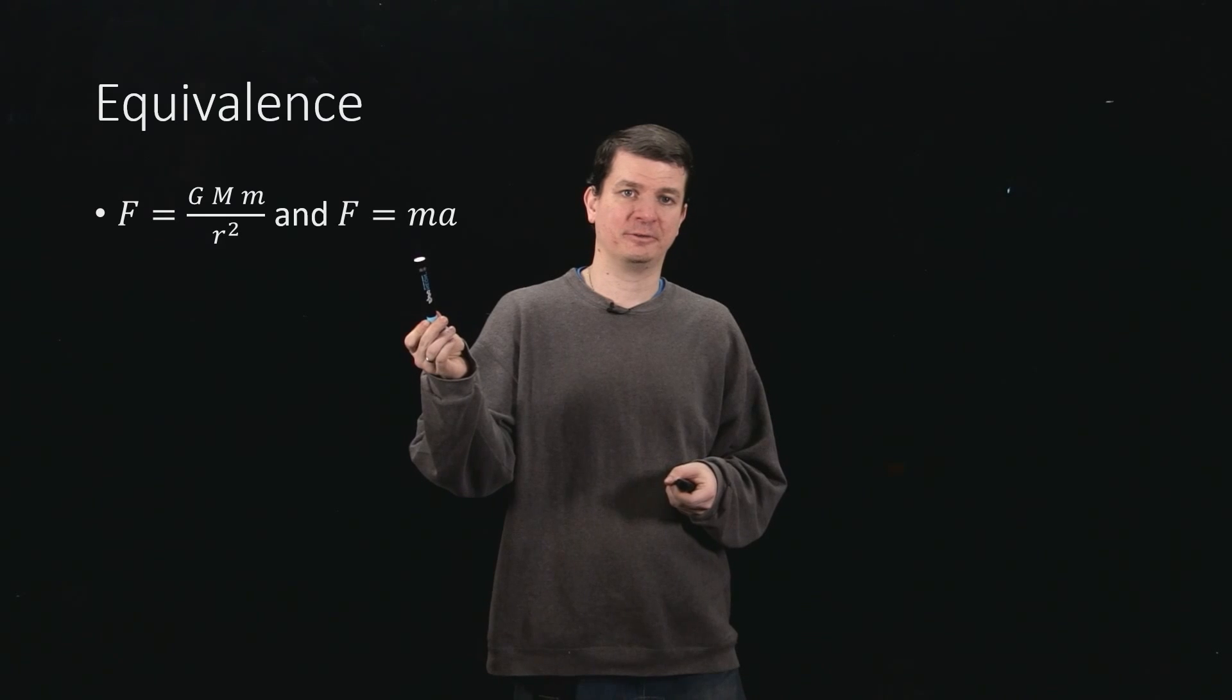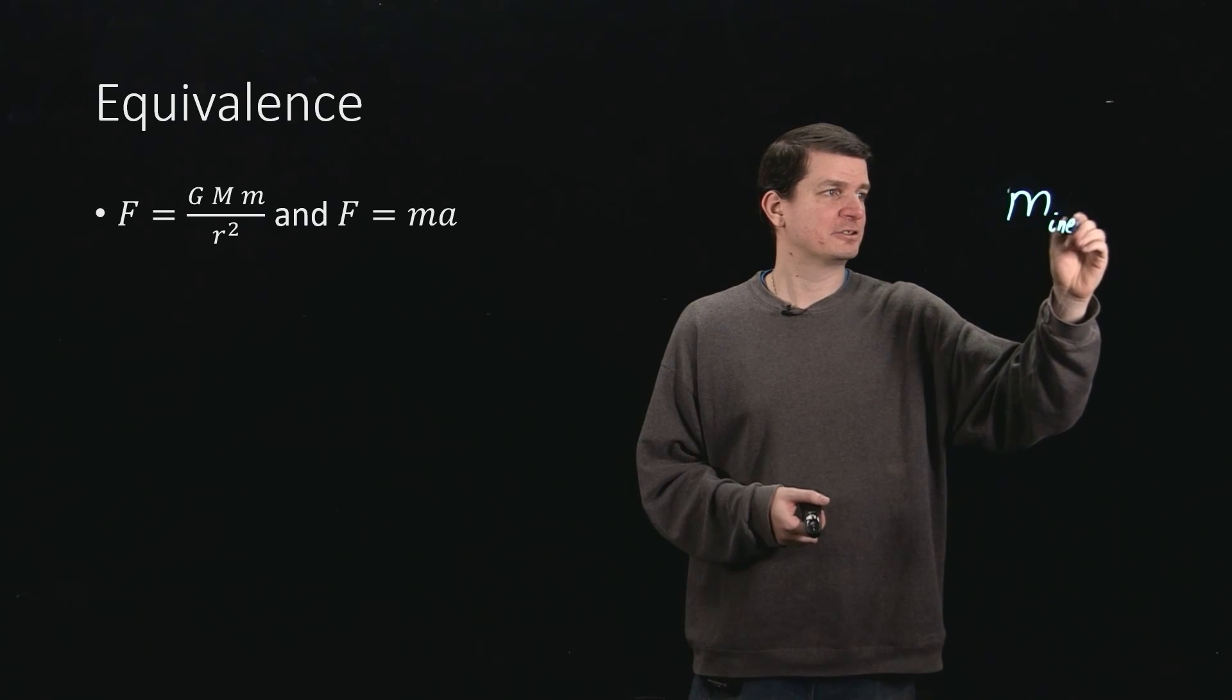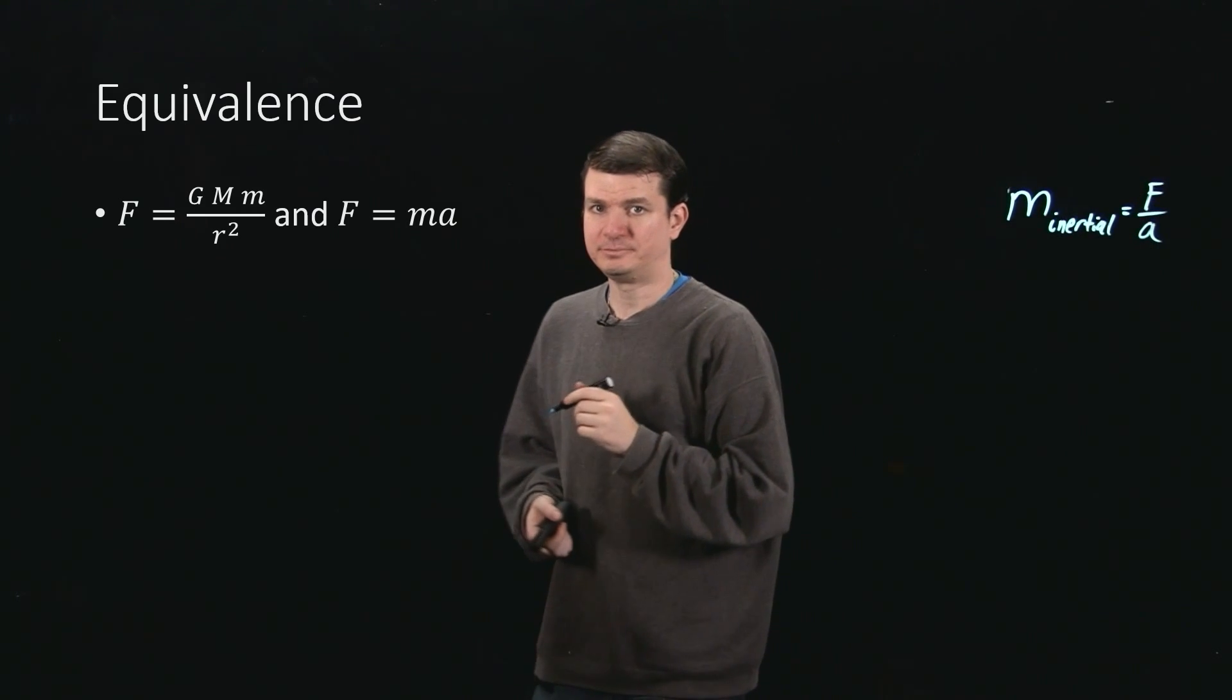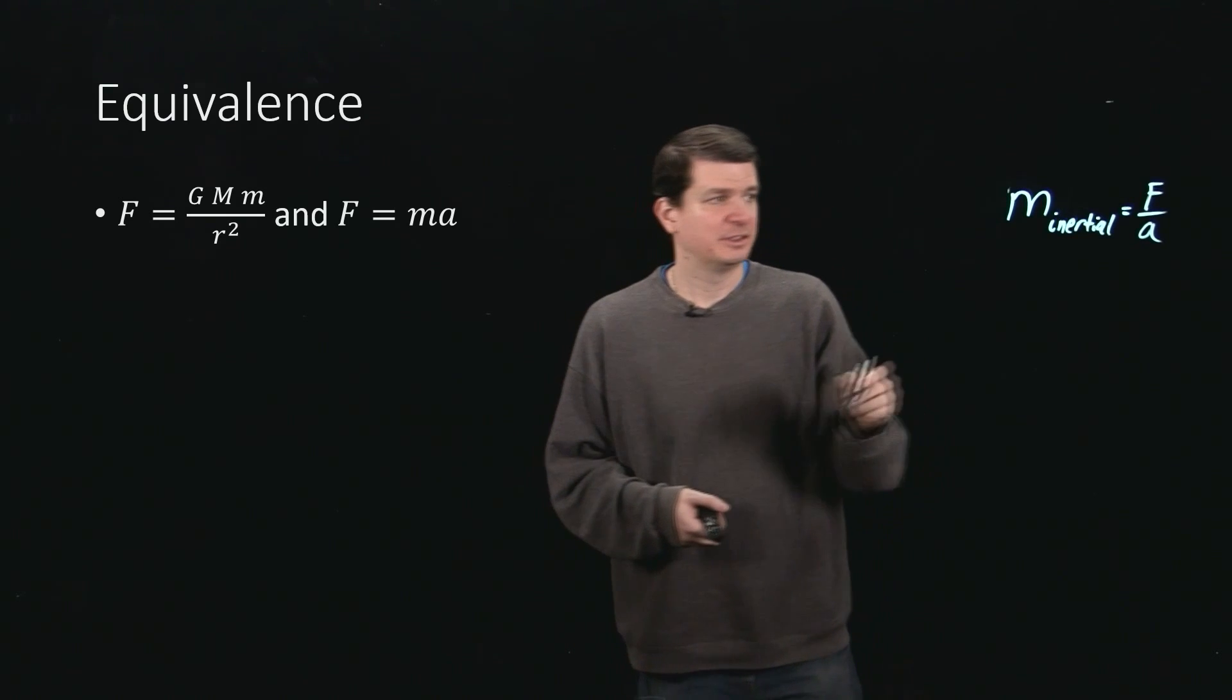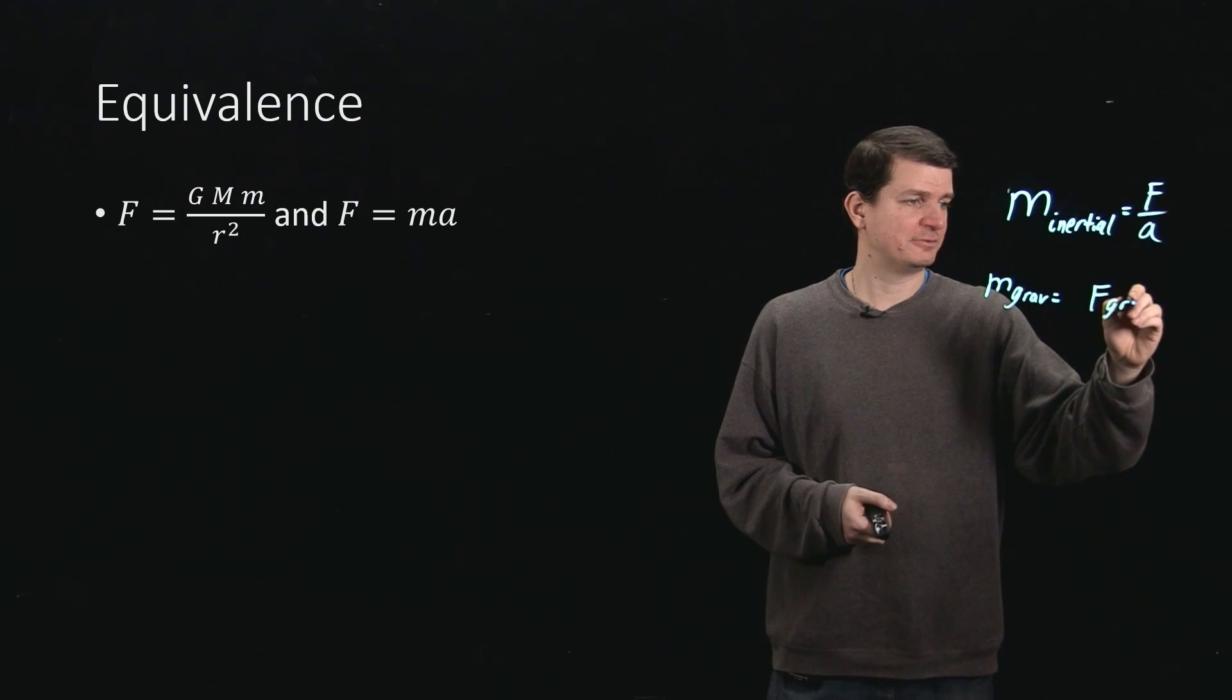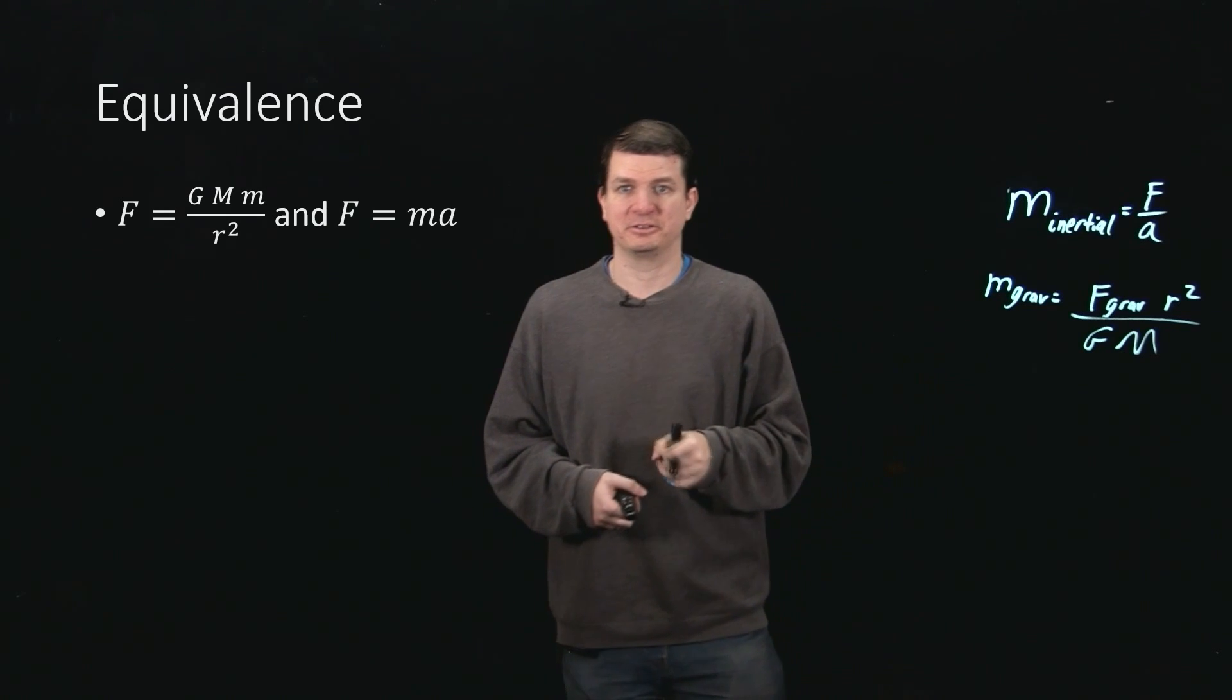So these are talking about two different things, this little m here, which we can call the inertial mass, and just from that one, we can say mass inertial is just the force divided by acceleration, just rearranging the equation on the right, whereas on the left we have little m, which is gravitational, and that thing, according to this, is the gravitational force, times r squared, divided by G and the mass of some other object that's exerting gravity on you.